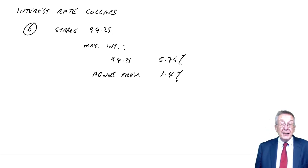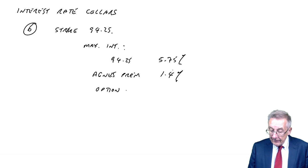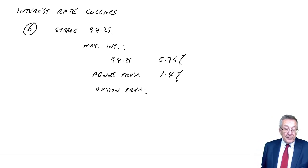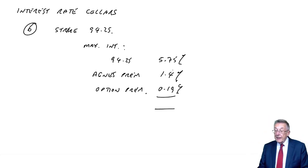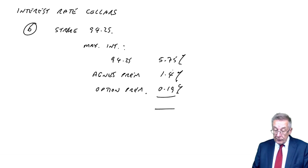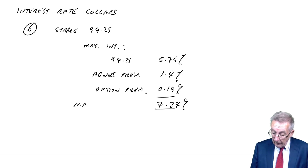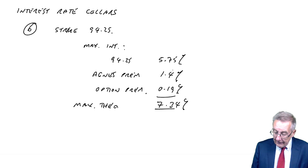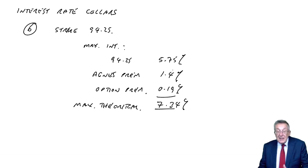She always paid 1.4% more, and in addition there was the option premium. We went for a September put — we were borrowing money — and the premium was 0.19%. That meant the maximum theoretical interest rate was 7.34%. So in theory, that's the maximum she'd pay.